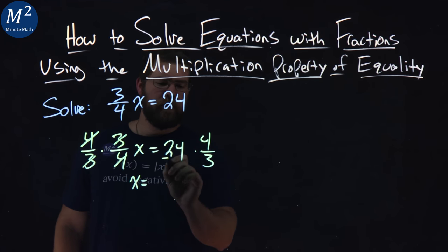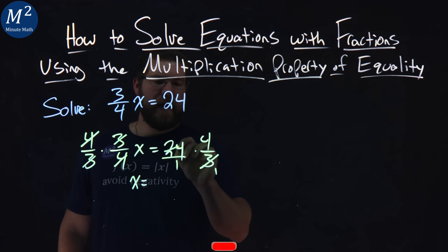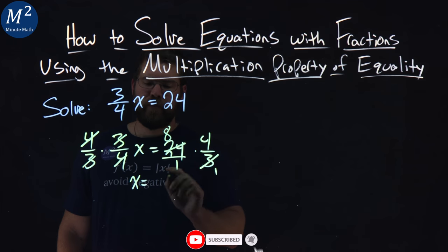Now, 24 times 4/3, remember that's like 24 over 1, 3 goes into 24 8 times. 8 times 4, 32.